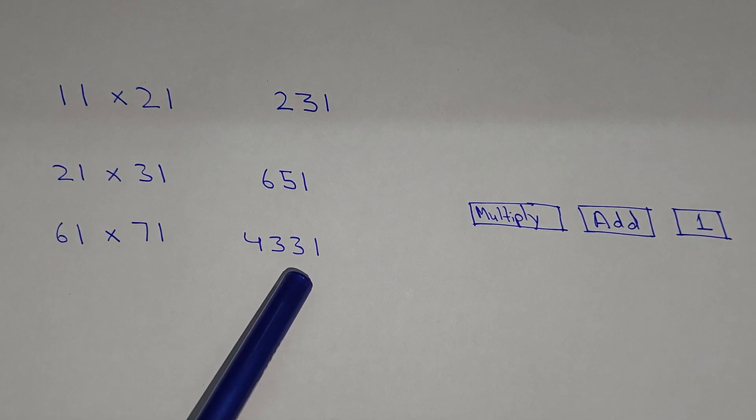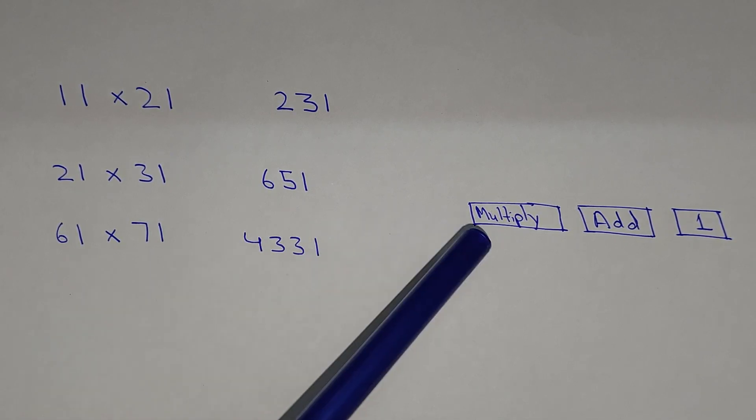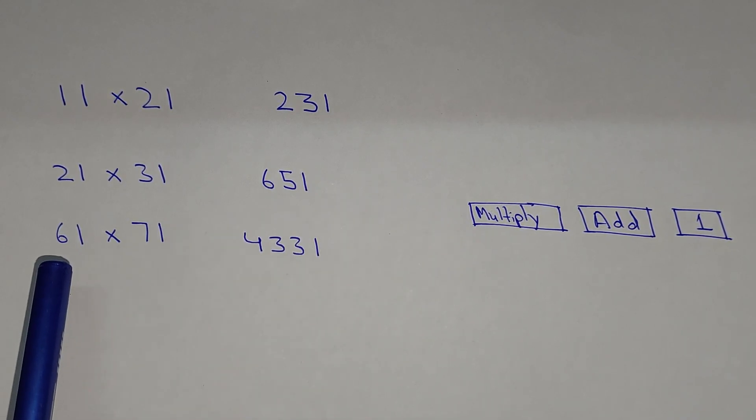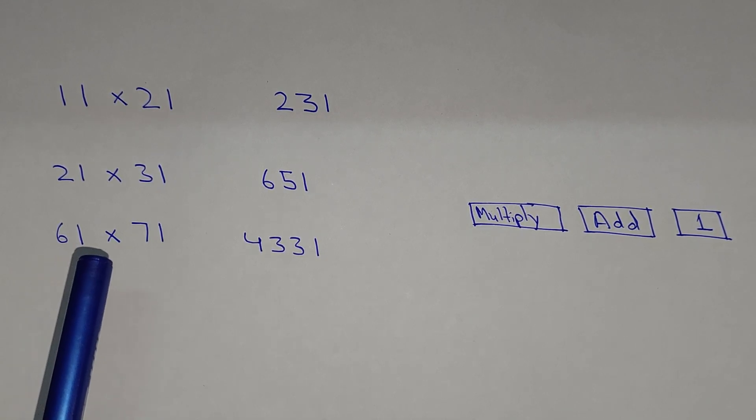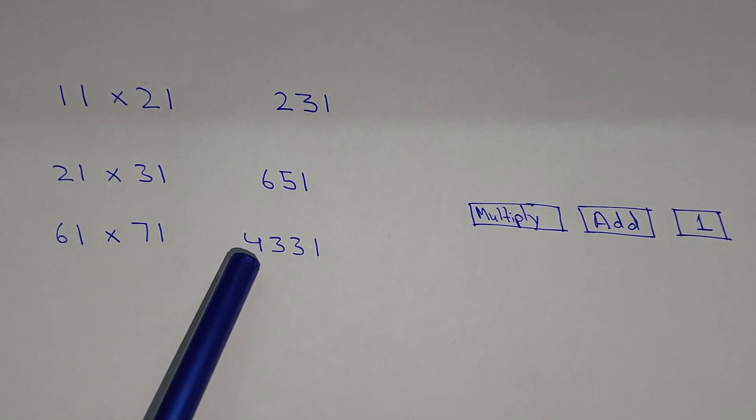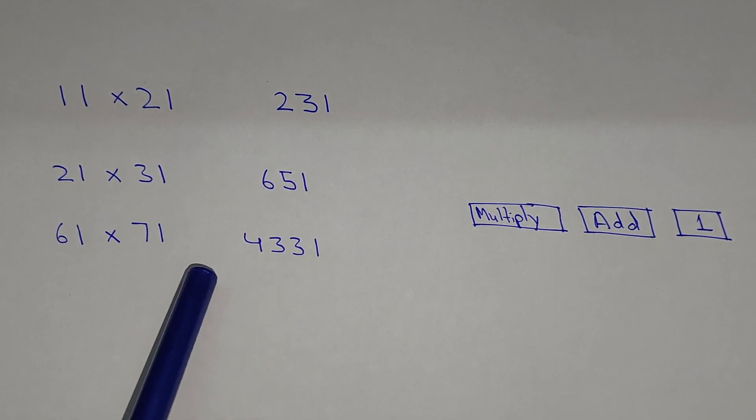And in the third step we multiply the leading digits, so 7 multiply by 6, that is 42. So 42 plus 1 that we carried last time, so 42 plus 1, that is 43. So 4331, this is the final answer. I hope you understand. Thank you for watching this video.